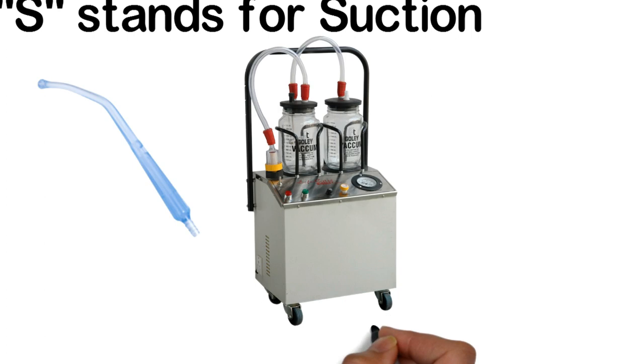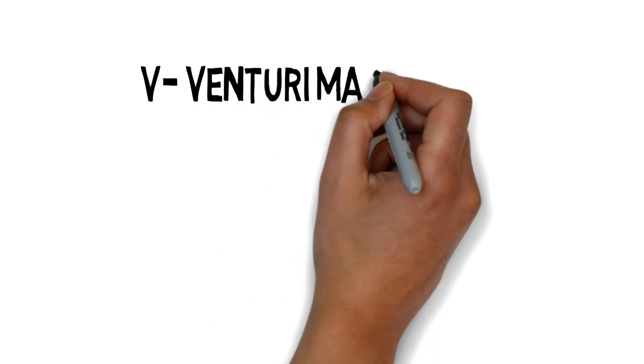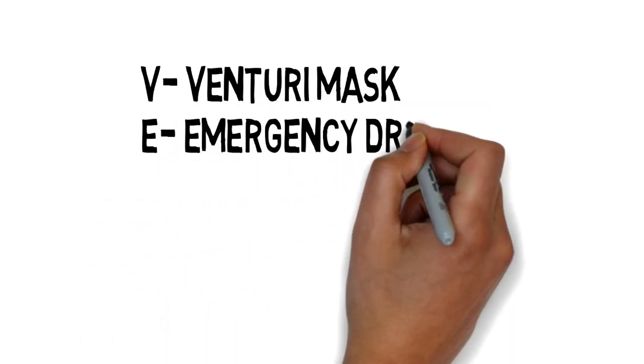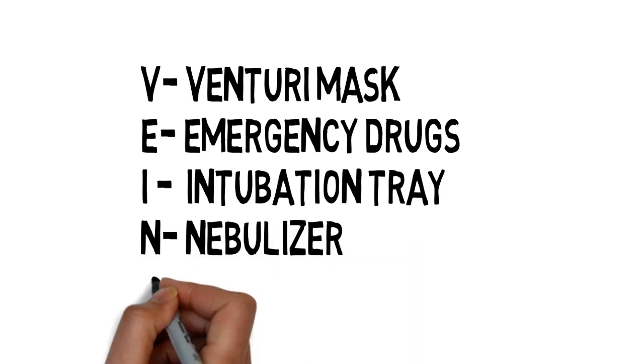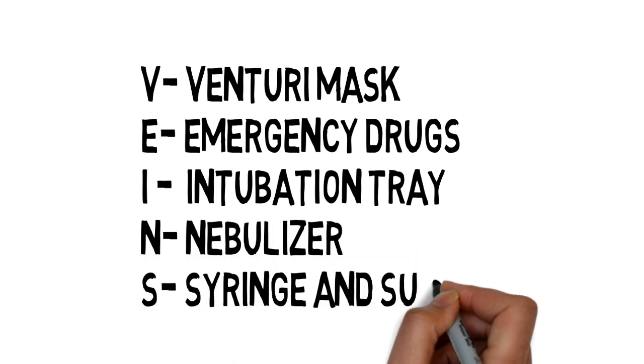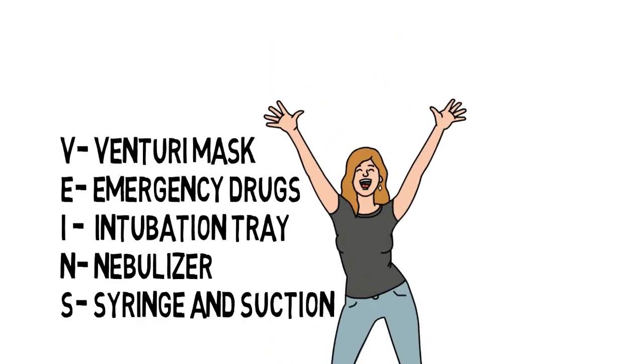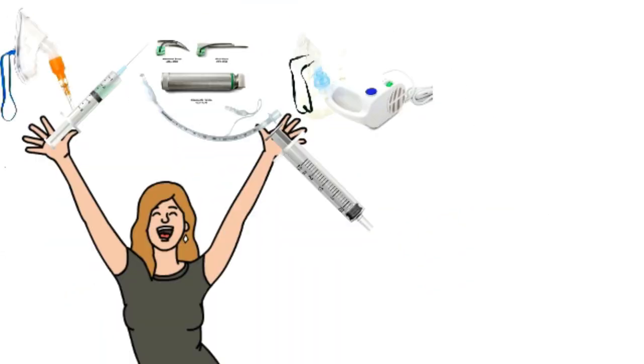In summary, for extubation we need: V for Venturi masks, E for emergency drugs, I for intubation tray, N for nebulizer, and S for syringe and suction. I hope it helps you to prepare all the equipment needed for extubation with perfection. Thank you.